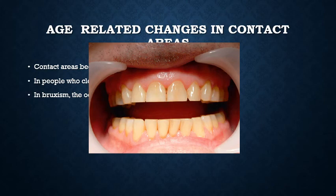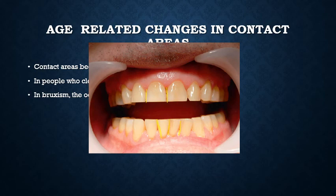In a patient with bruxism, you don't see the contact in just the middle or incisal one-third — the whole proximal surface is contacting. There are virtually no embrasures visible. In contrast, younger individuals have only contact points, while older individuals have much broader contact areas.